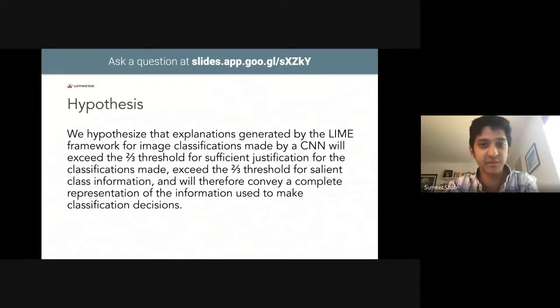We limit the scope of our study to convolutional neural networks and the LIME explanation framework. We say that the framework generates sufficient and salient explanations if explanations perform at least two-thirds as well as the original images. As a hypothesis for our experiment, we hypothesize that LIME explanations will exceed the two-thirds threshold for sufficiency and salience.